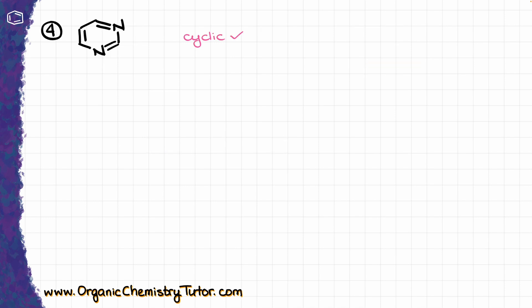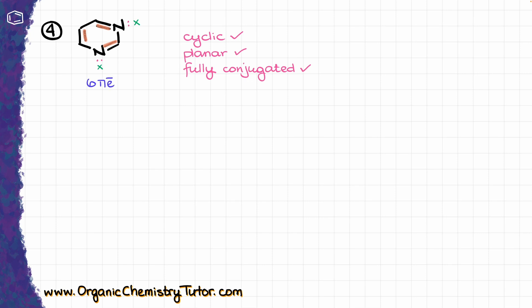My next molecule is cyclic, planar, and fully conjugated as well. When it comes to the electrons, we first count the pi bond electrons: two electrons here, two electrons here, two electrons here. We also have electron pairs on our nitrogens — one pair on the bottom nitrogen and one on the top nitrogen. However, just like in the previous example, since each nitrogen already has a pi bond, neither of those electron pairs are counted toward our pi electron count, because those electrons are not part of the pi system. So overall, I have six pi electrons, which fits the 4n plus 2 formula, making this molecule aromatic.